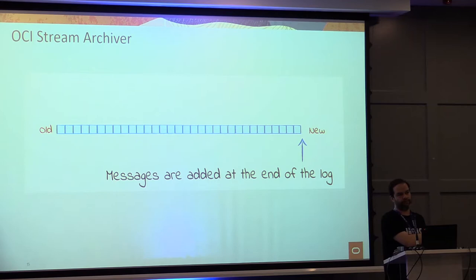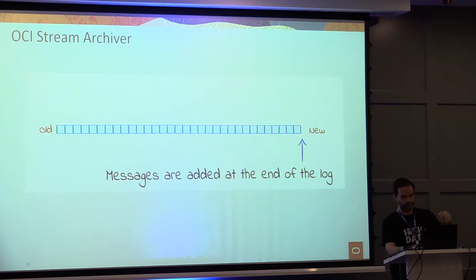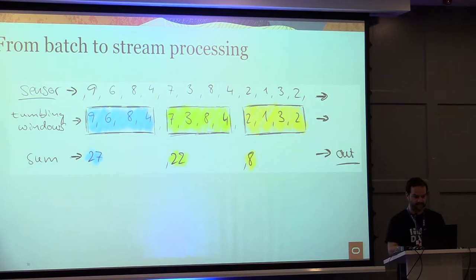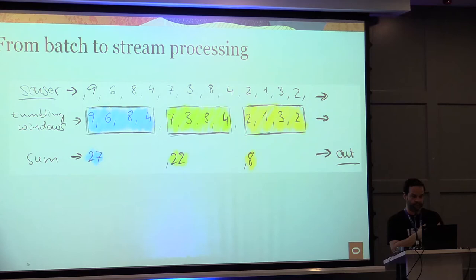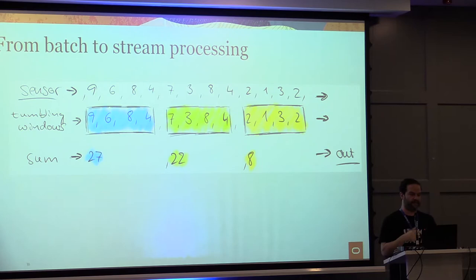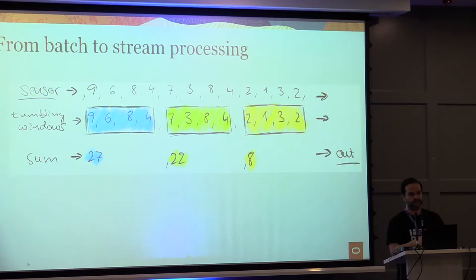Another concept you need to know when doing streaming is batch, micro-batch, and windows. For example, I have a sensor that sends data — nine, six, eight, seven — but I can group them and slice them into windows. My windows can be by number of messages, by size, or by any rule I want. For example, here I receive the nine, the six, and the four, then I send the sum. I can have different windows and they can overlap each other — for example, every time I have five lines in my log, or every time I reach one megabyte, or every five seconds.